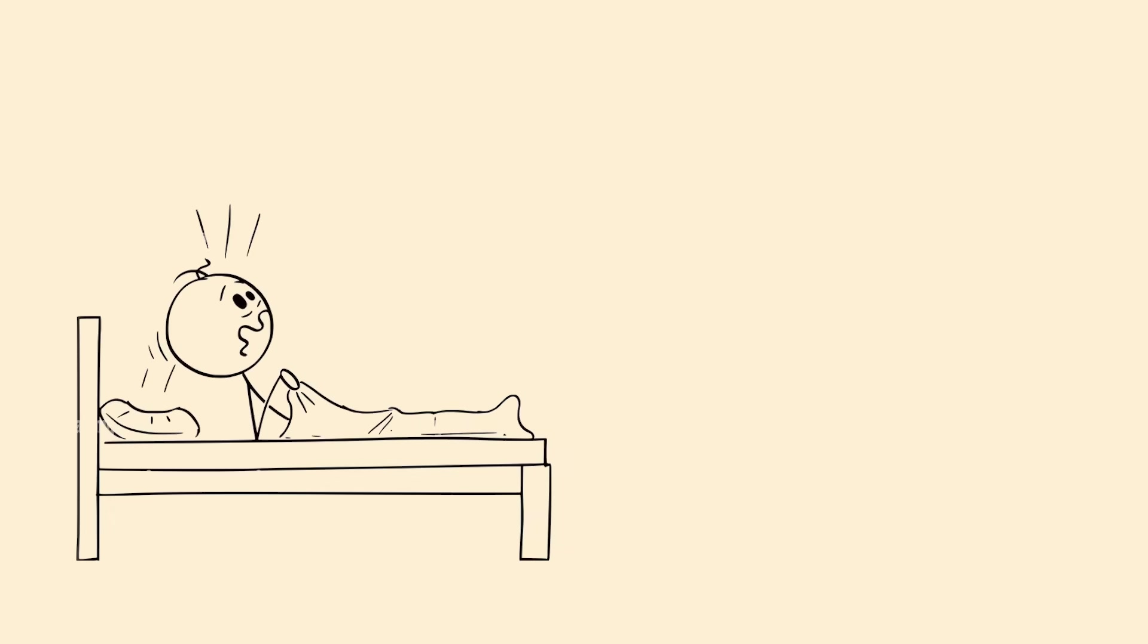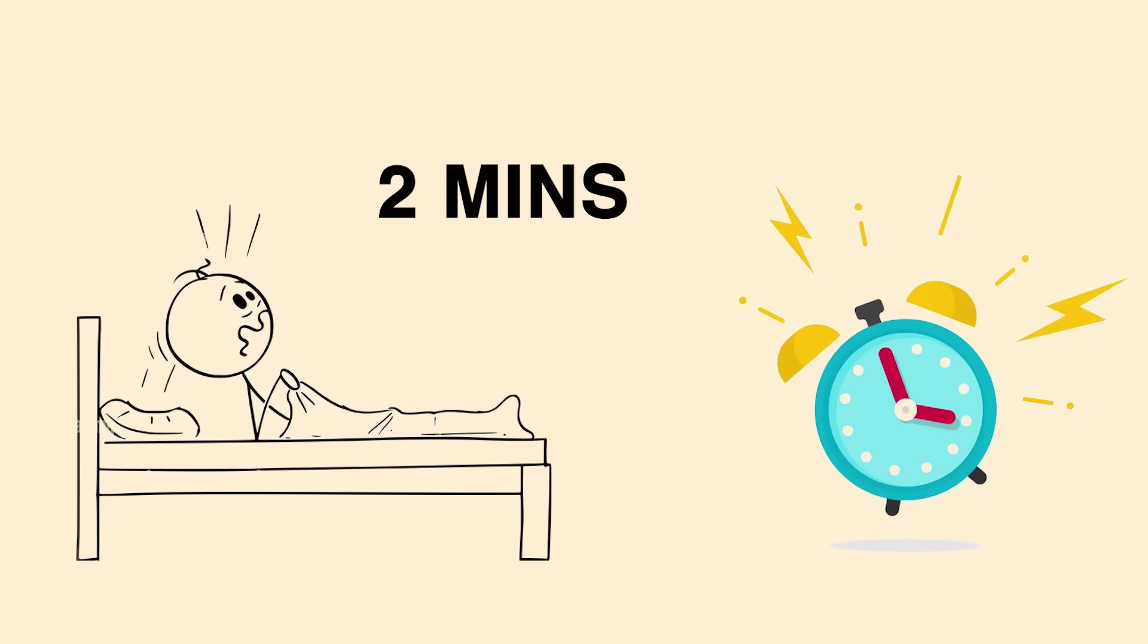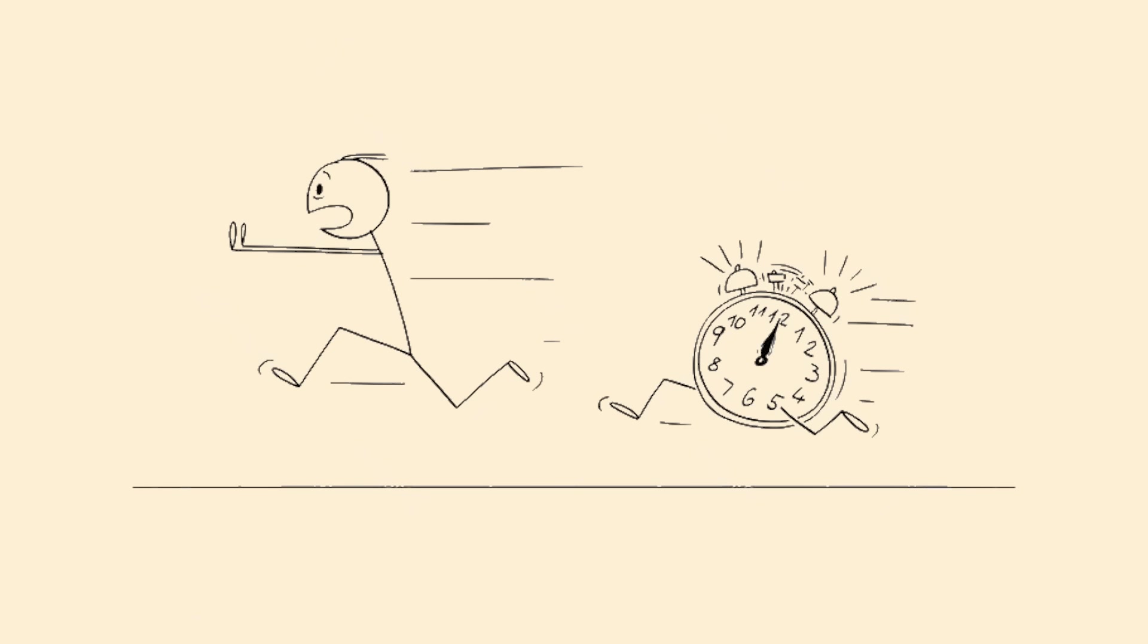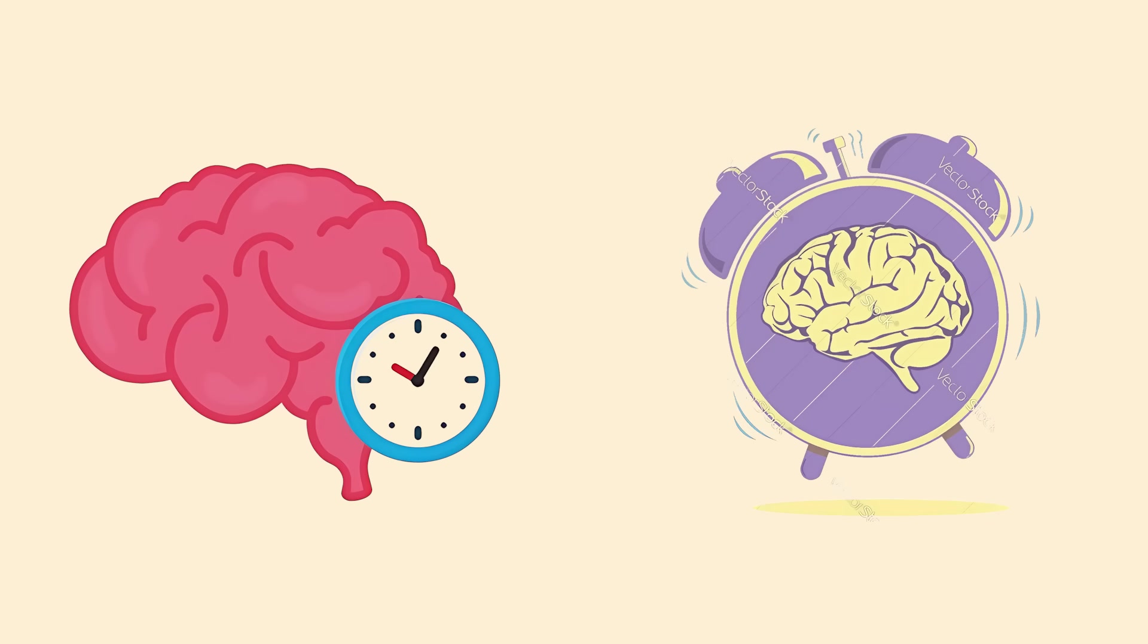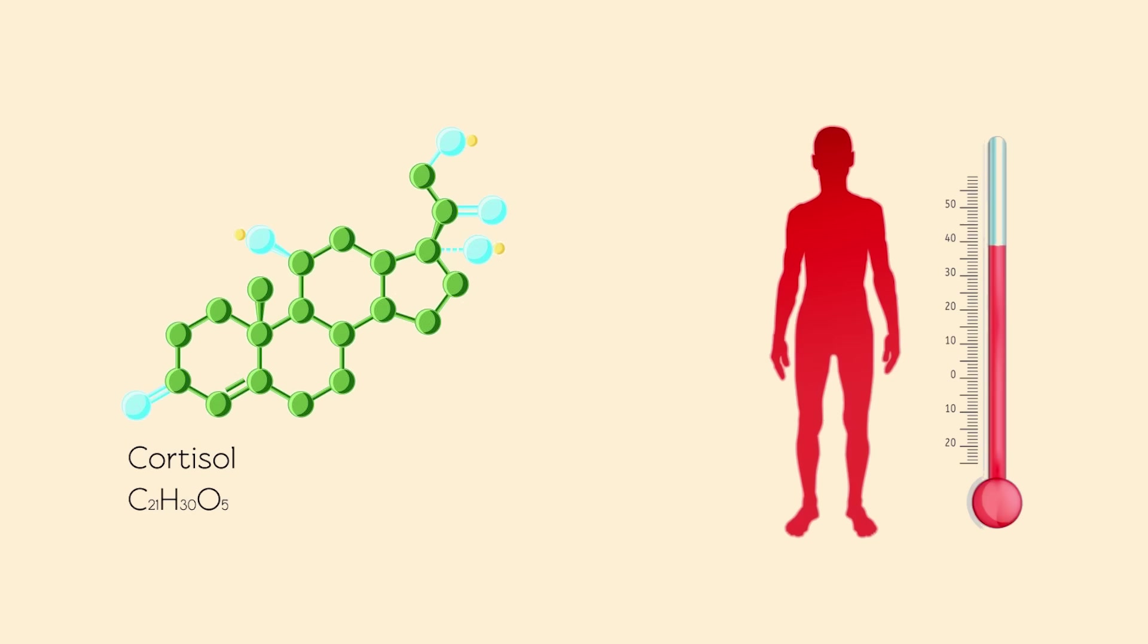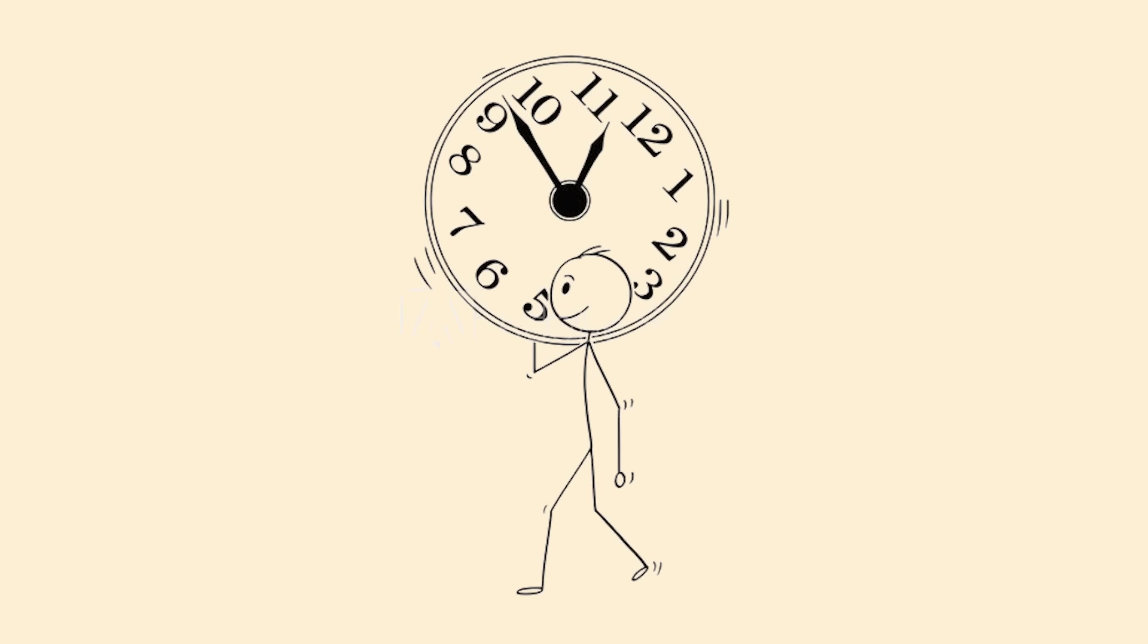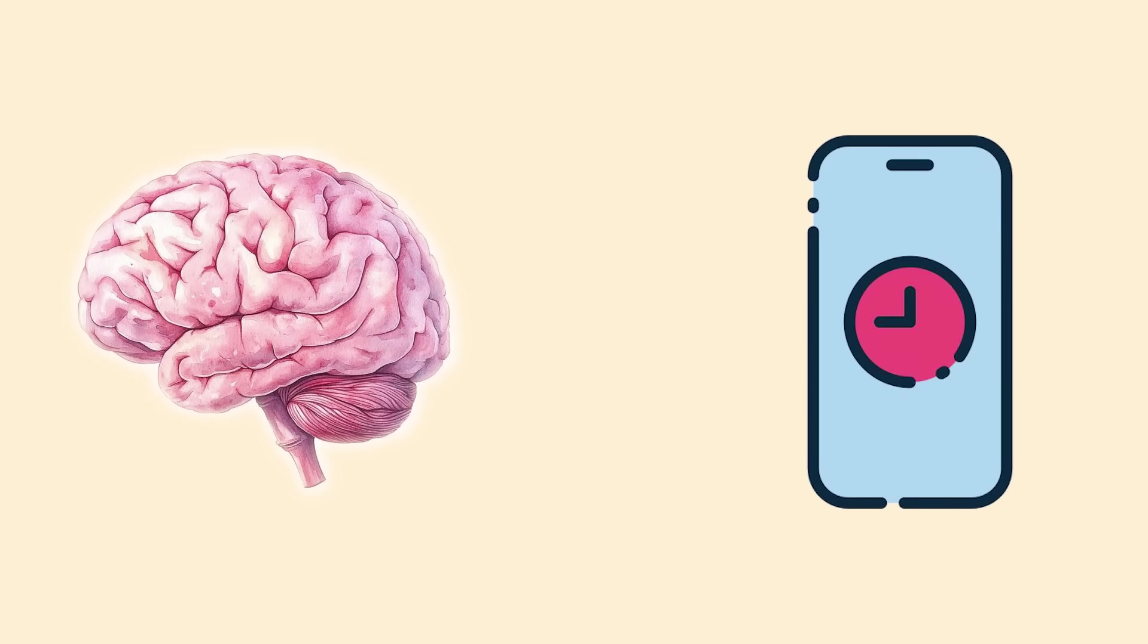The Phantom Alarm. You wake up exactly two minutes before your alarm goes off every single morning without fail. This uncanny timing happens because your circadian rhythm is incredibly precise. Your brain actually starts preparing to wake up about an hour before your alarm, gradually increasing cortisol and body temperature. When this happens consistently, your internal clock becomes so accurate it beats your phone. Your brain basically installed its own alarm app without asking permission.